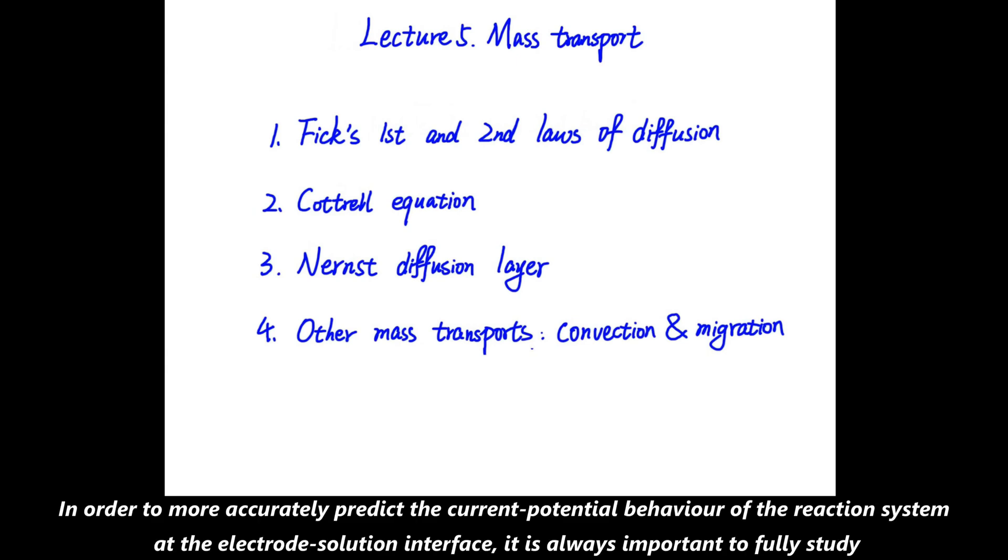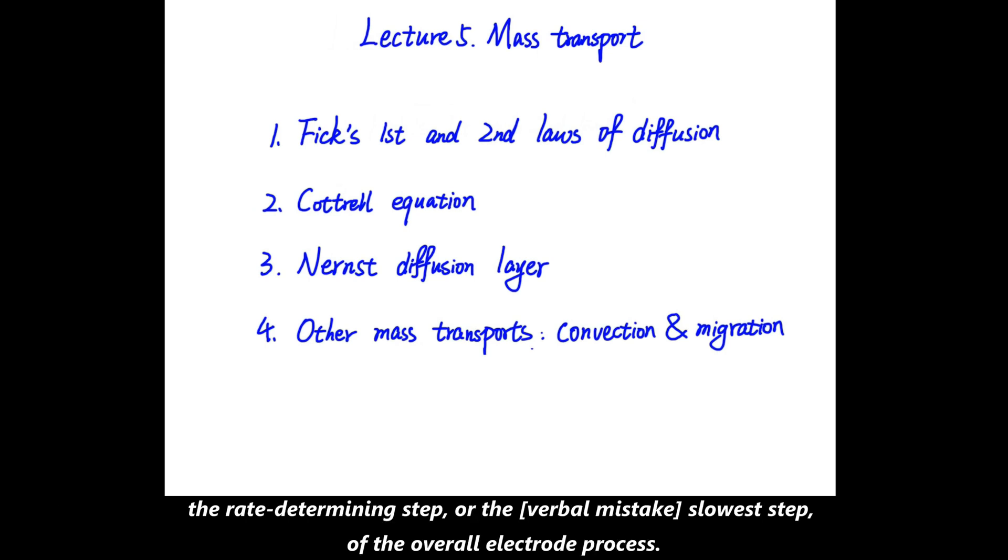In order to more accurately predict the current potential behavior of the reaction system at the electrochemical interface, it is always important to fully study the rate determining step or the slowest step of the overall electrode process.